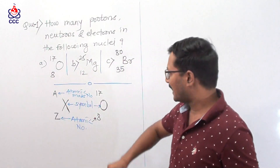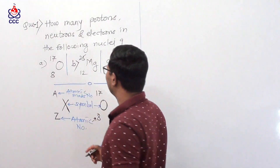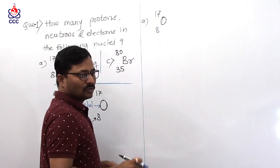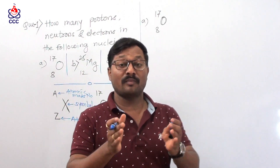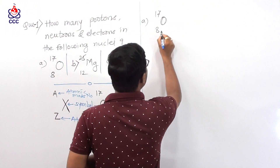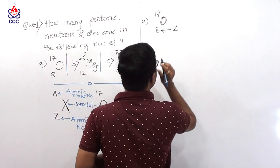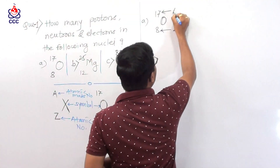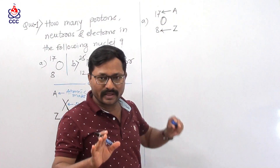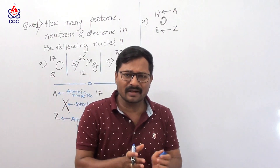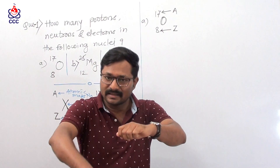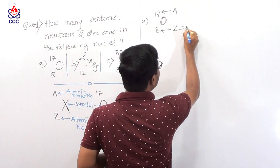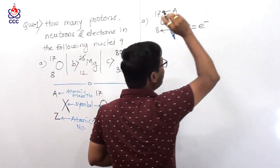We already have this concept studied. Now we have to implement it on examples. The first case is oxygen O, with atomic number 8 and atomic mass number 17. We need to find the number of protons, number of neutrons, and number of electrons. Here, 8 is at the base, meaning it is Z — the atomic number. And 17 is at the superscript, meaning it is the atomic mass number, represented by symbol A.